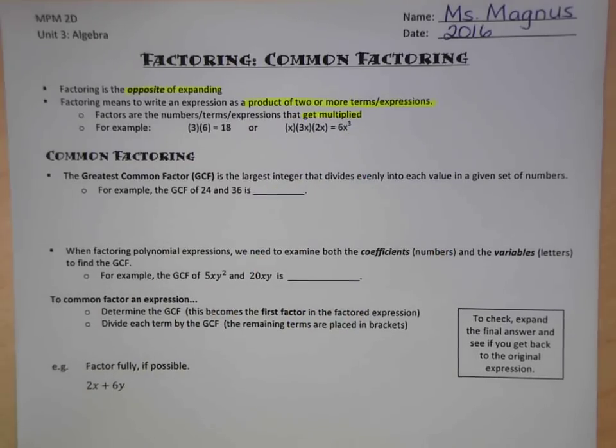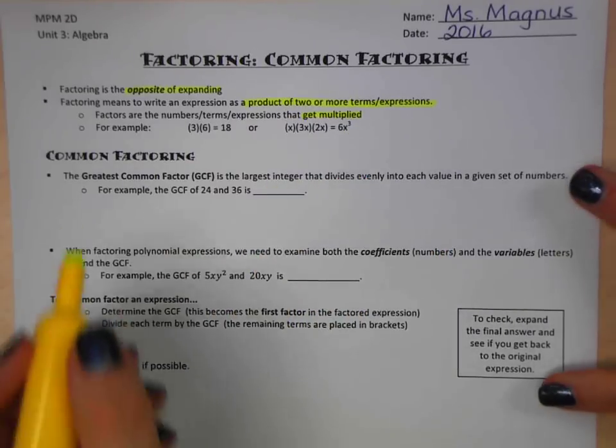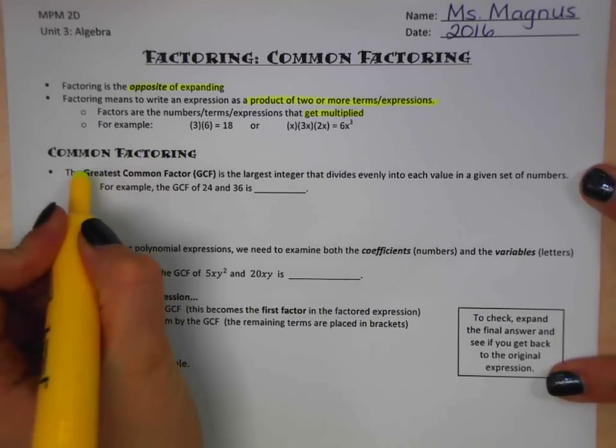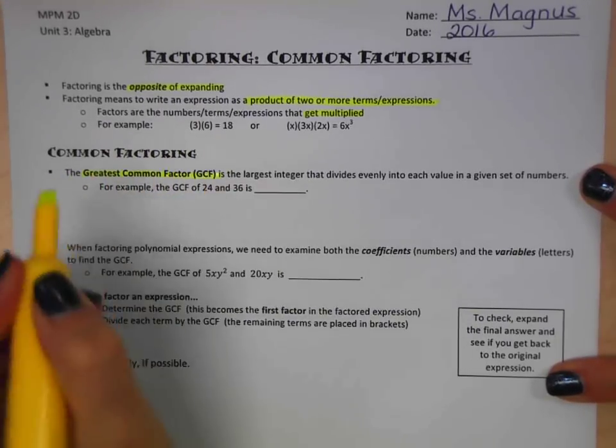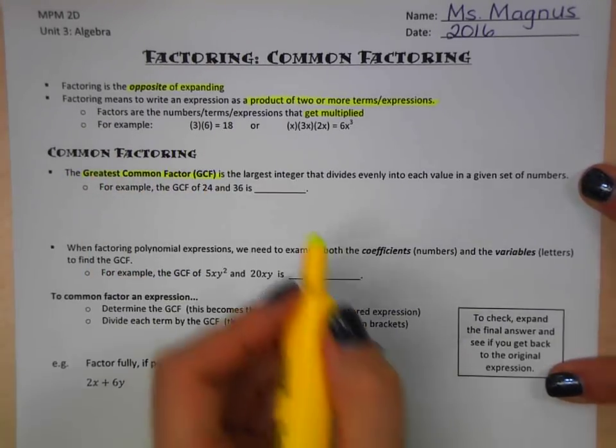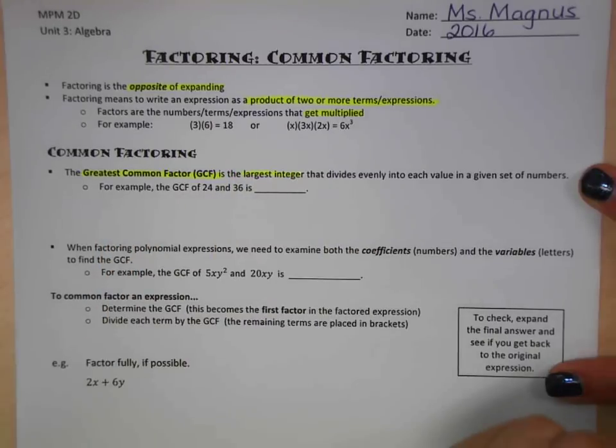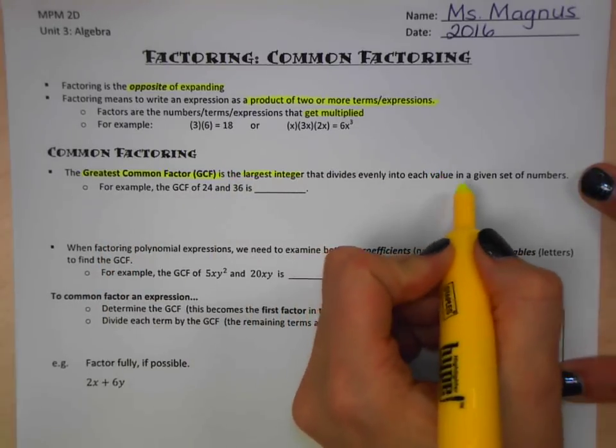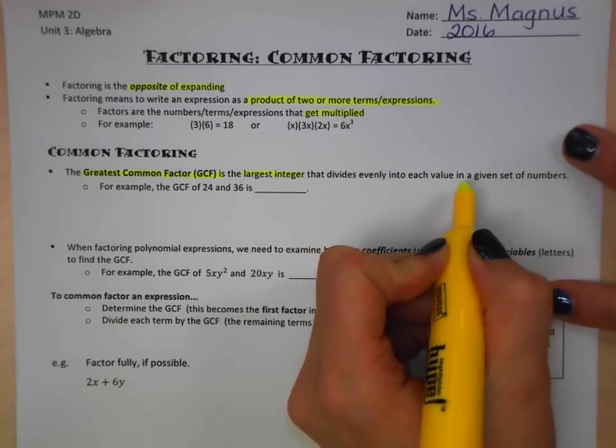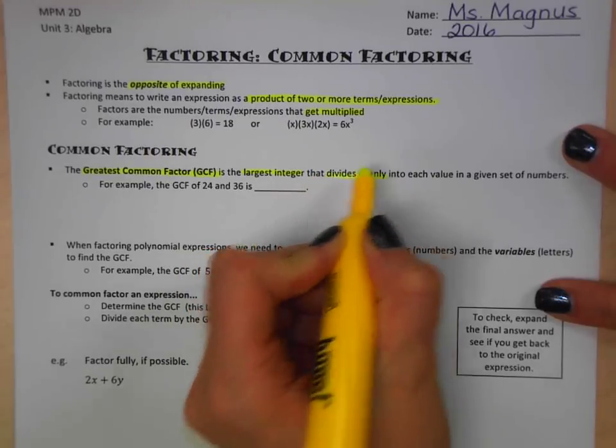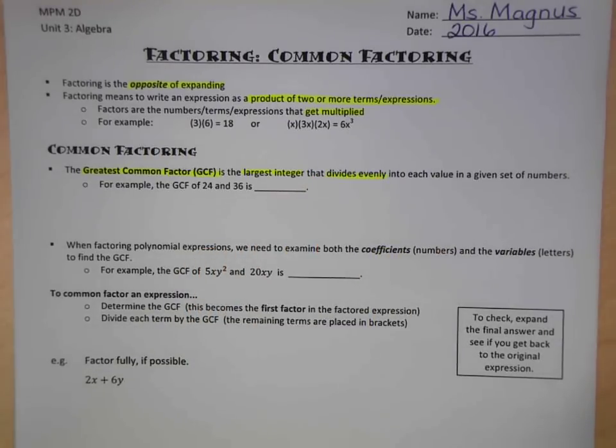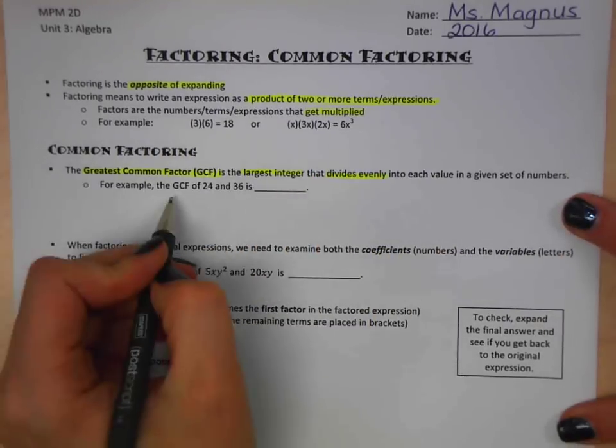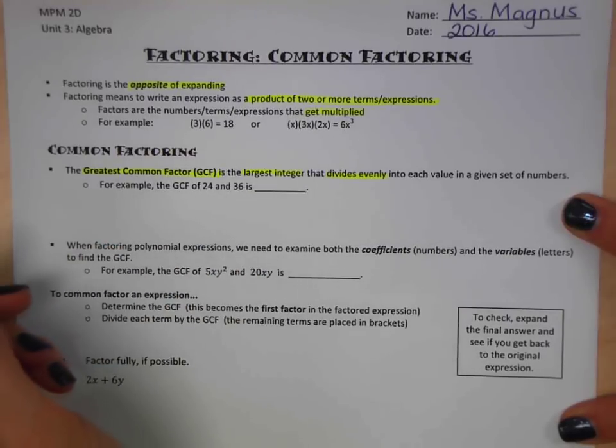Now common factoring, what we're going to talk about today, is the most simple form of common factoring. We need to find the greatest common factor. This is the largest integer, a whole number, that divides evenly into each value of a given set of numbers. So if we're going to go for a super straightforward example, the greatest common factor of 24 and 36.